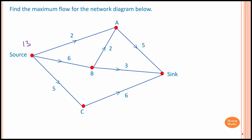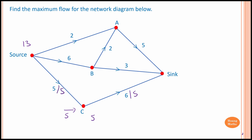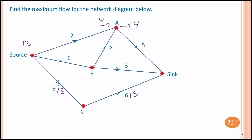To do this, we start from the sink. We know 6 units flow into the sink from vertex C, so 6 units flow out of C — but only 5 units flow into C, so outflow cannot exceed inflow, meaning only 5 units flow out of C and to the sink. The maximum flowing into C is 5. Now for vertex A: 5 units flow to the sink from A, but only 2 units flow in from B and 2 from the source — totalling 4 — so the outflow must be 4, not 5. We have 2 units from the source and 2 units flowing to A.